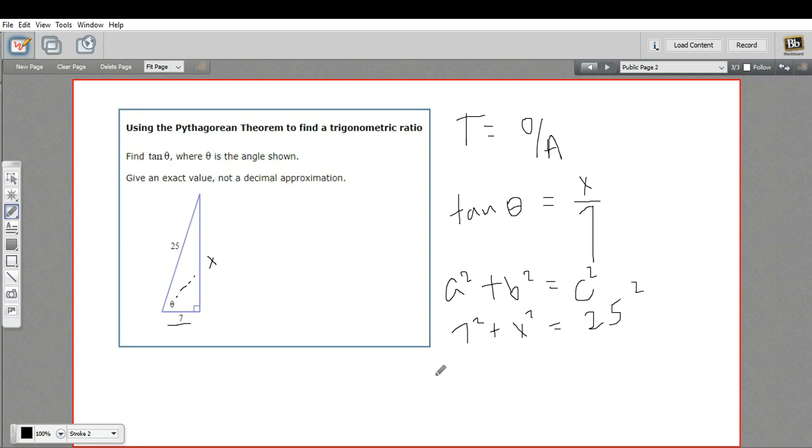All right, so 7 squared is 49 plus x squared. And let's see, 25 squared is 625. We can subtract 49 from both sides to get that x squared term alone. And I think that gives us, let me put it over here, x squared equals 576.